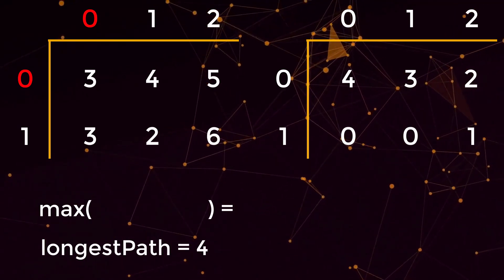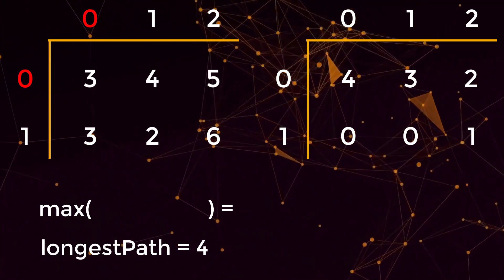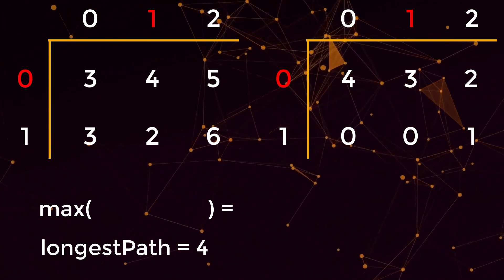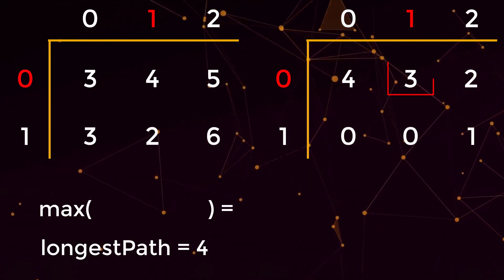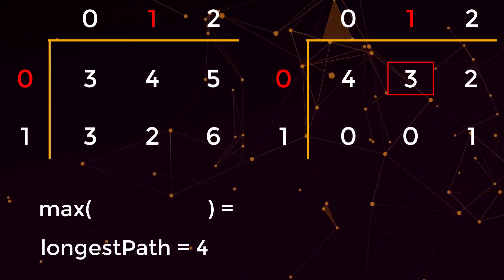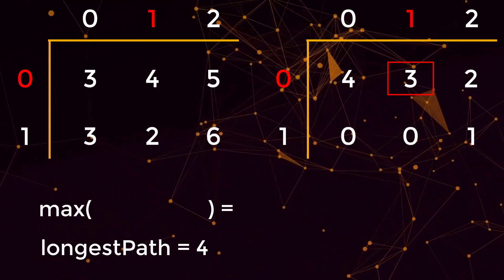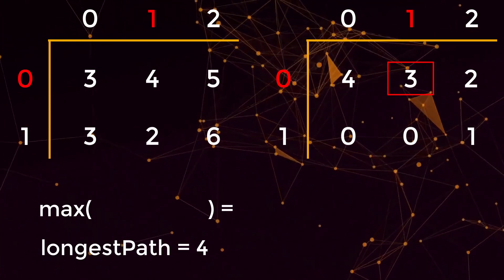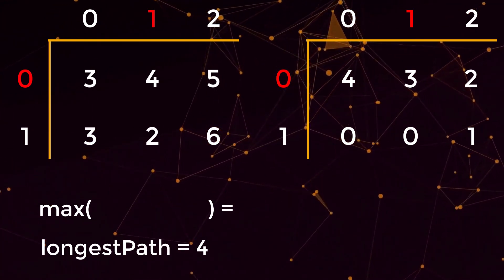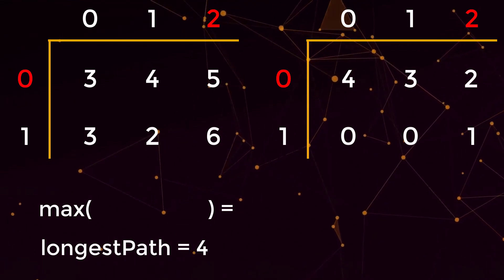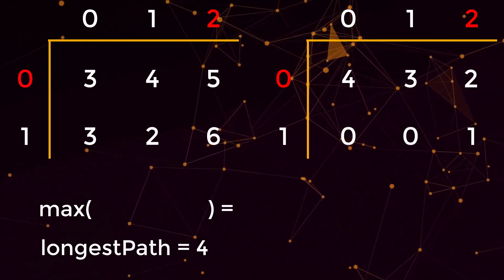Continuing iteration, we move to position (0,1). We've already visited it — we check the cache and it's greater than zero, so we just return three. Three is not greater than our current longest path of four, so we do nothing. Moving to (0,2), the cache holds two, which is less than four, so we do nothing again.